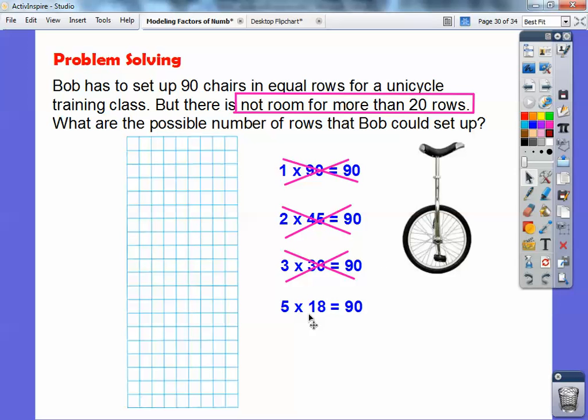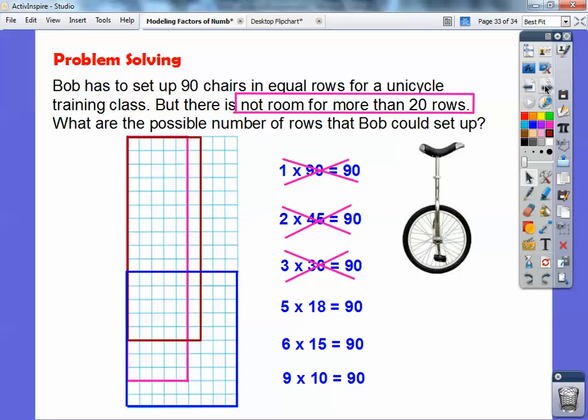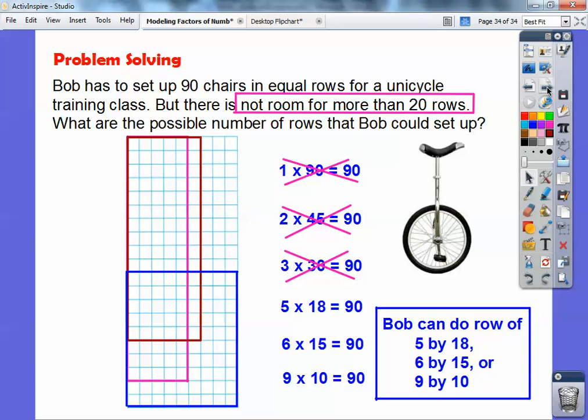And look, there's a number that's less than 20. So, I can use that guy right there. So, there's one possible row. Here's, and I did it by columns. Here's 5 columns by 18 rows right here. And if you counted all those up, there would be 90 seats in there. Okay? So, that'll work. 6 goes into 90 also. 6 times 15. So, that'll work. 7 doesn't. 8 doesn't. Ooh, 9 times 10. That'll work also. Alright. So, I think I'm done with factors of 90, you guys. And so, we had to pick the ones that had numbers less than 20 in there. So, let's answer this. So, what are the possible number of rows that Bob could set up? So, Bob can do rows of 5 by 18 or 6 by 15 or 9 by 10. Okay?